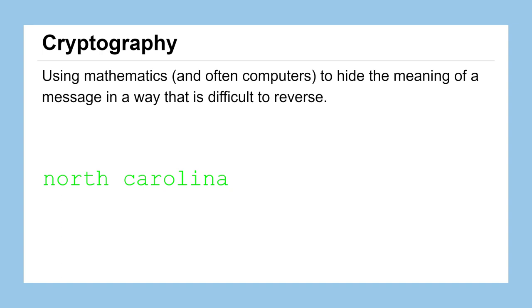For example, say we have this short message of North Carolina. We could encrypt or hide the meaning of this message by applying some cryptography methods, in this case the Caesar cipher, to create this ciphertext that we see on the right, which is unreadable. If we were to take away the original message and all you had was the ciphertext, it'd be rather difficult to understand exactly what the original message was.